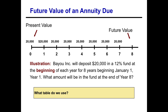We need to determine: is this an ordinary annuity, or is it an annuity due? Well, the problem says we'll deposit $20,000 in a fund at the beginning of each year for eight years. We know it's an annuity because we're making the same payment every period for eight periods. And since the payments are made at the beginning of each period — rather than the end — that makes this an annuity due.